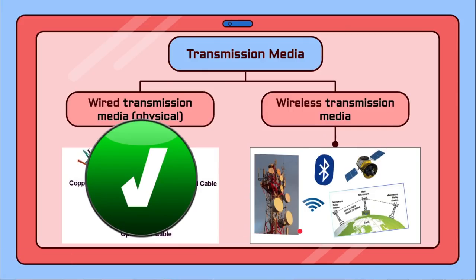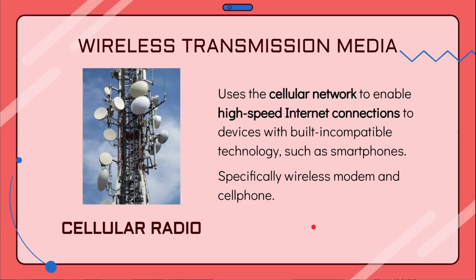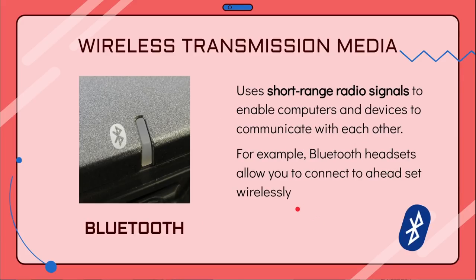Now let's look at the types of wireless transmission media. The first type is cellular radio. Cellular radio uses a cellular network to enable high-speed internet connections, compatible with technologies such as smartphones. A common example of cellular radio is mobile data internet.